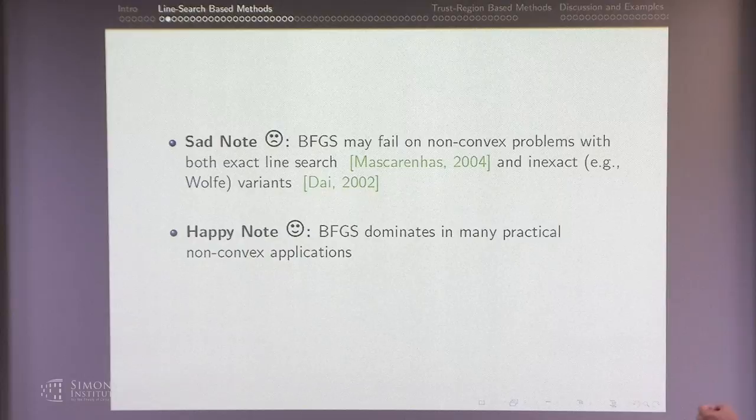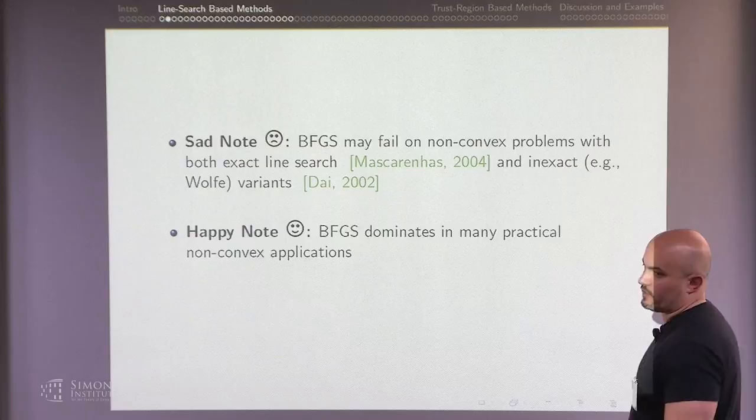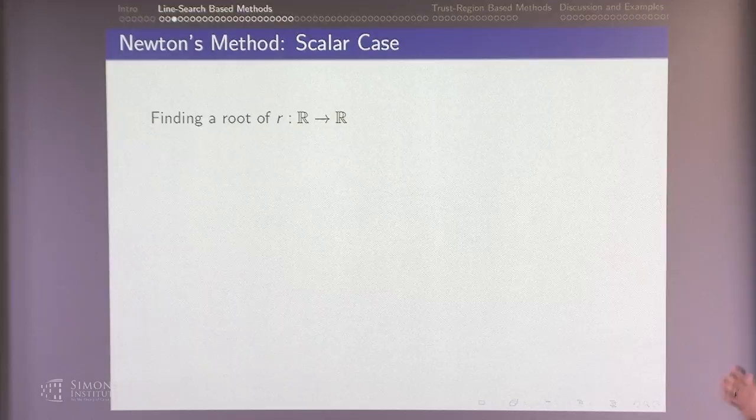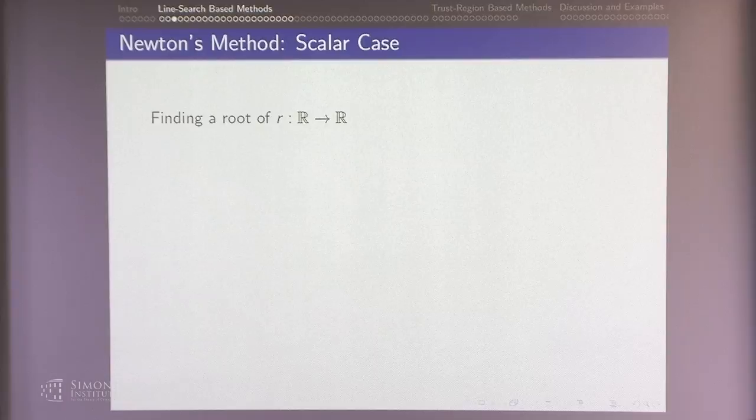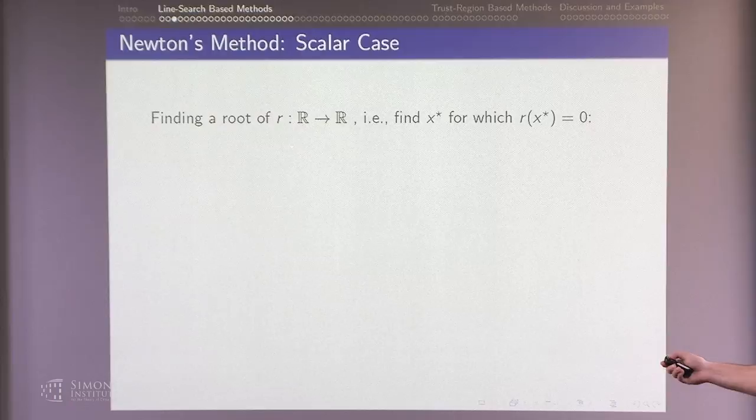Let me quickly run through what quasi-Newton methods are. Let's start with Newton methods in the context of root finding. Suppose I have a nonlinear function from R to R, and my goal is to find the root — a point such that f(x) = 0. I write the Taylor expansion around x_k. This is exact with the remainder. I drop the remainder, find what to put in to maintain the equality, and that point becomes my next iterate. Rearranging gives the famous Newton iteration for root finding: x_{k+1} = x_k - r / r'.